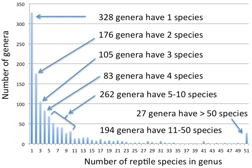A genus, plural genera, is a taxonomic rank used in the biological classification of living and fossil organisms, as well as viruses, in biology. In the hierarchy of biological classification, genus comes above species and below family.